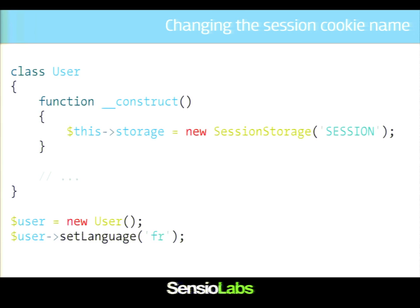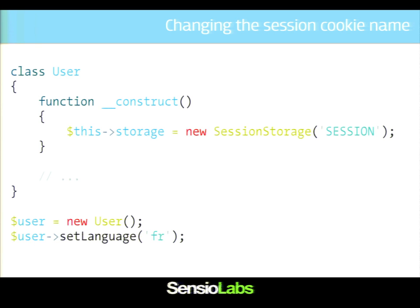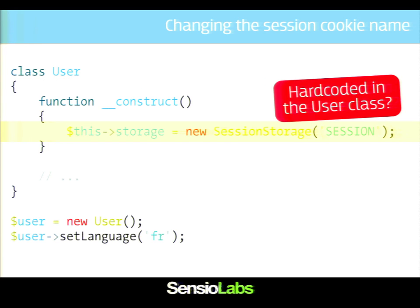Let's see and talk about all the benefits we have from injecting our dependencies into our objects. I'm going to explain why the first example — creating the session storage inside the user constructor — is really bad, even if it's much easier for the user. The first reason: let's say that I want to change the session name, the cookie name. This is how I can do that with the first example — I can just hard-code the name here in the user class. Is it good enough? Probably not, because it's hard-coded, so I can't configure it from the outside.